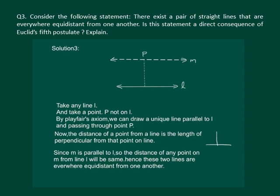Since M is parallel to L, the distance of any point on M will be the same from line L. Hence the two lines M and L are equidistant everywhere.